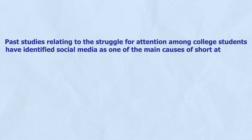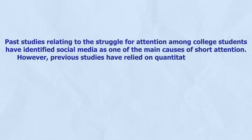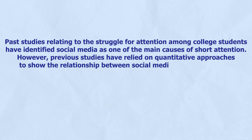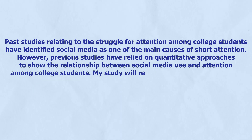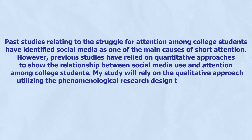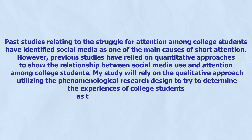When writing the literature review, focus on one theme at a time and provide all necessary citations. Remember to examine suggestions for future research from the scholarly articles you reviewed and use them to support your current research. For example, considering the articles I have reviewed, I can justify my current study by stating that past studies on the struggle for attention among college students have identified social media as a main cause of short attention. However, previous studies relied on quantitative approaches, whereas my study will utilize a phenomenological qualitative design to determine the experiences of college students as they struggle for attention.